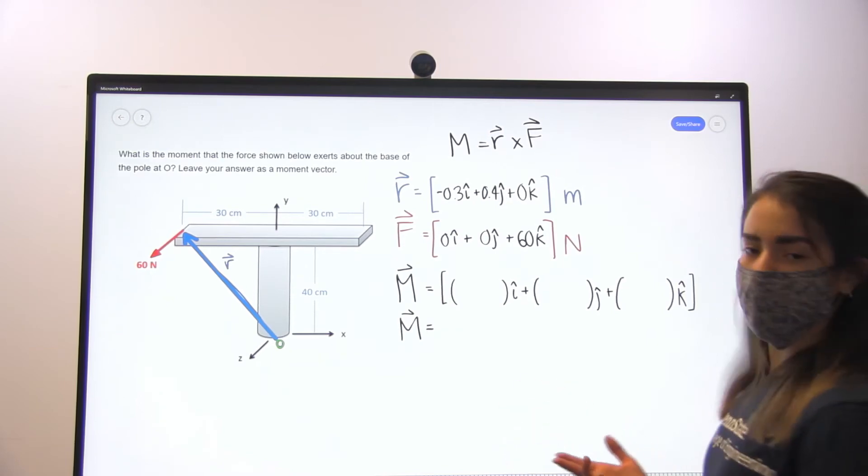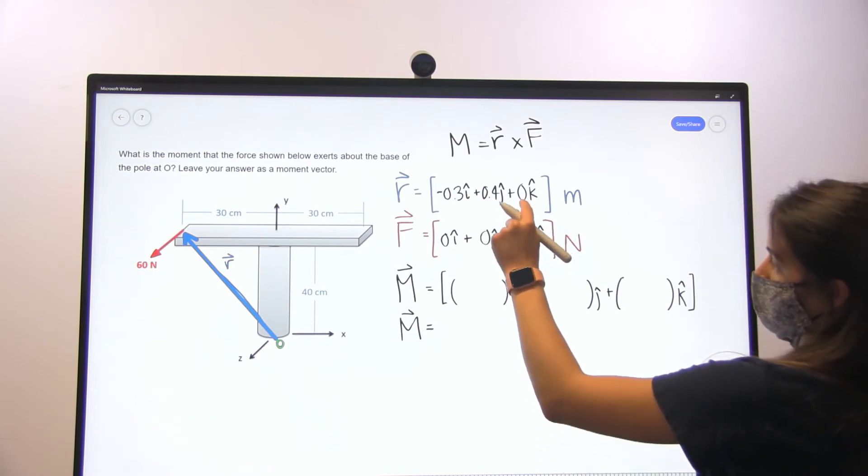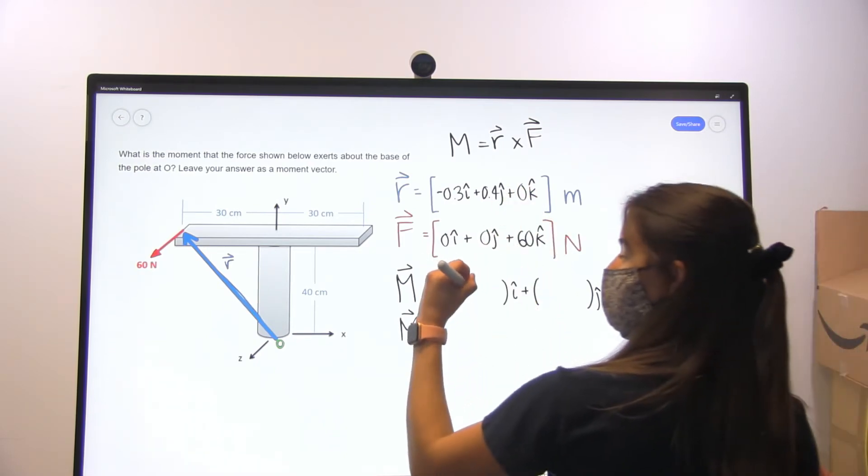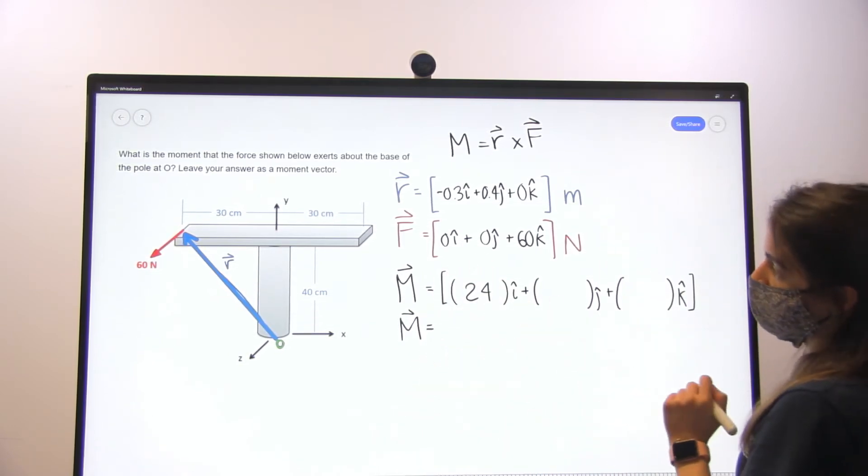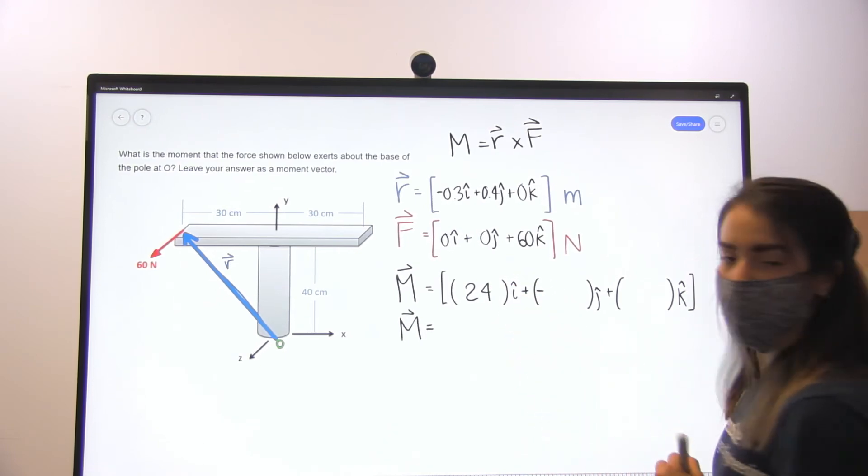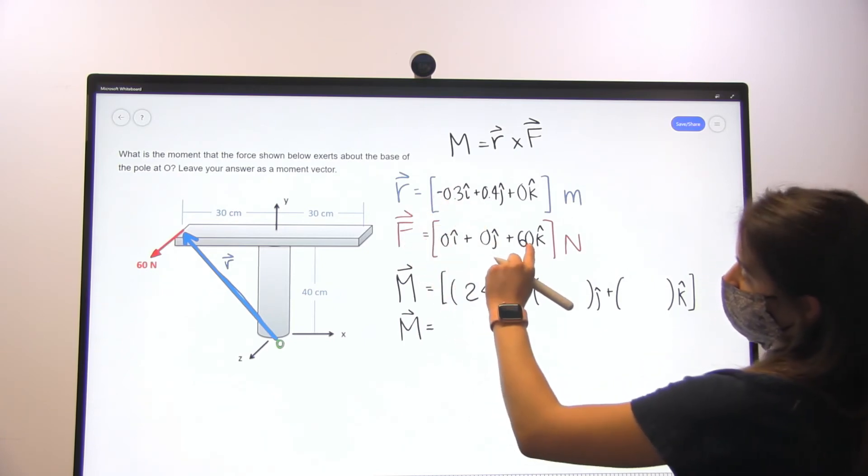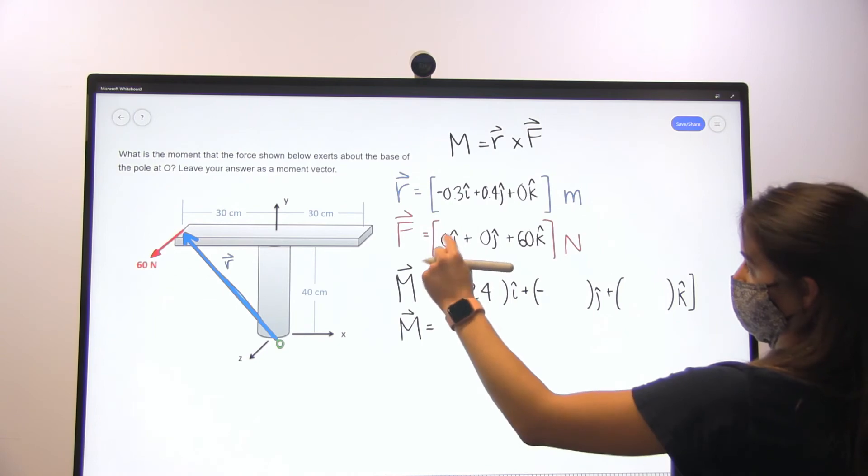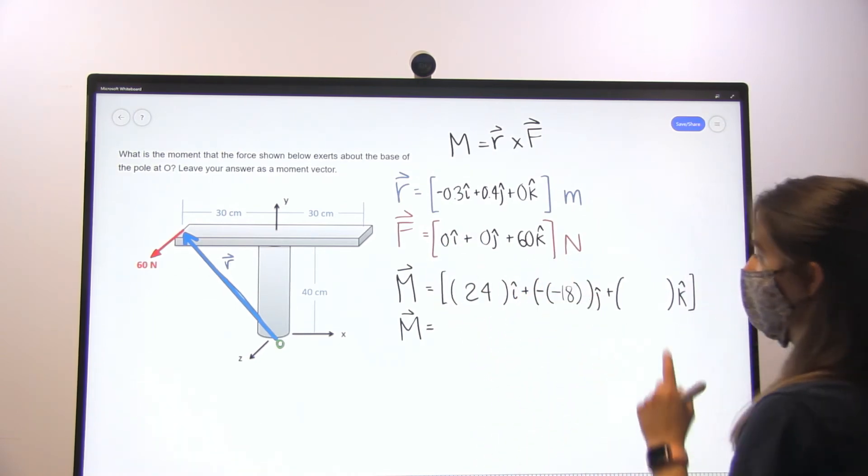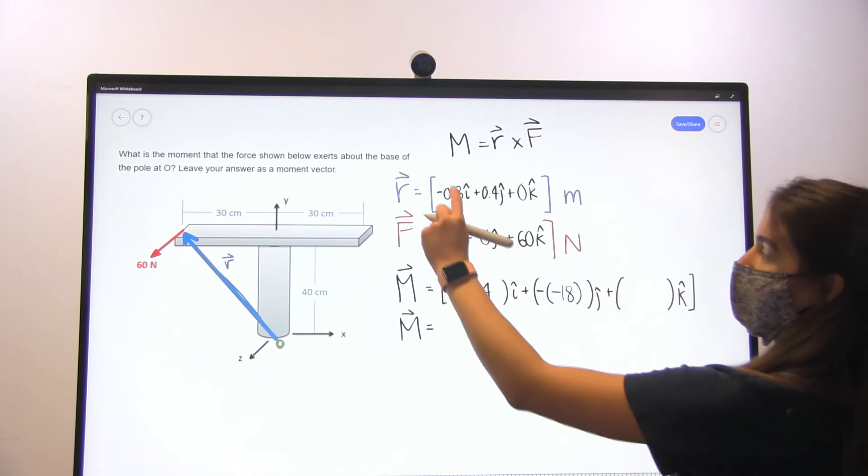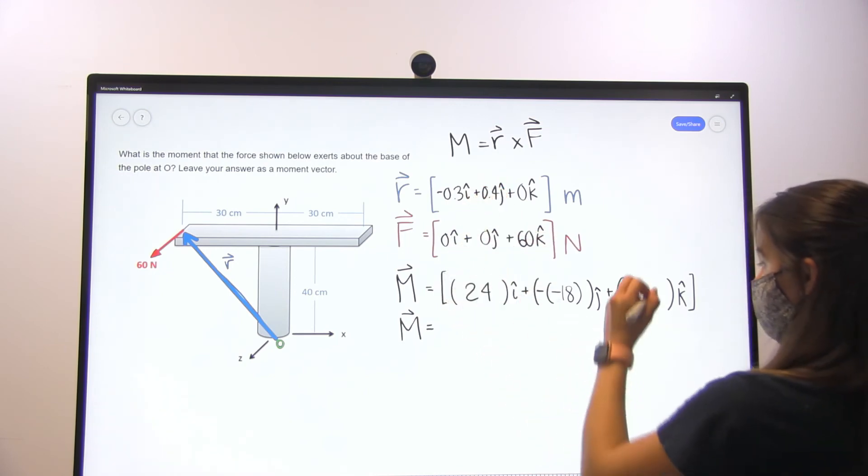So performing our cross product, for the i component we're going to have 0.4 times 60 minus 0 times 0. For the j direction, we're going to have minus 0.3 times 0 minus 0.4 times 0. And for our k direction, we're going to have minus 0.3 times 0 minus 0.4 times 0, so 0.